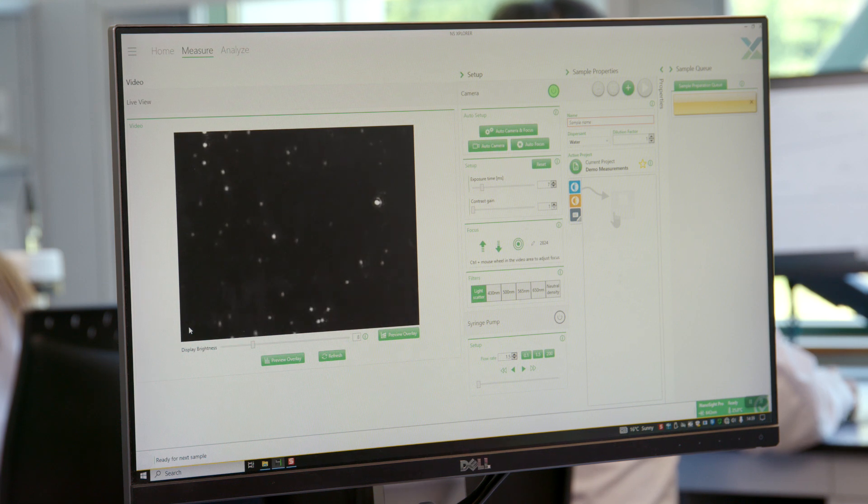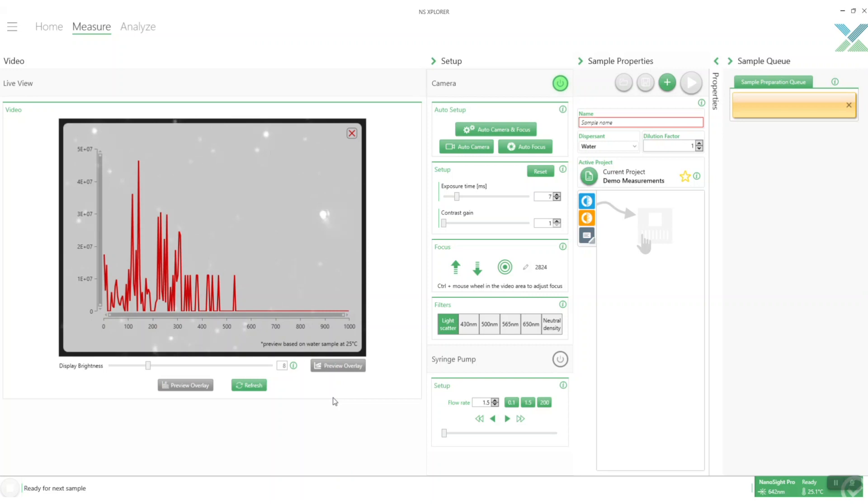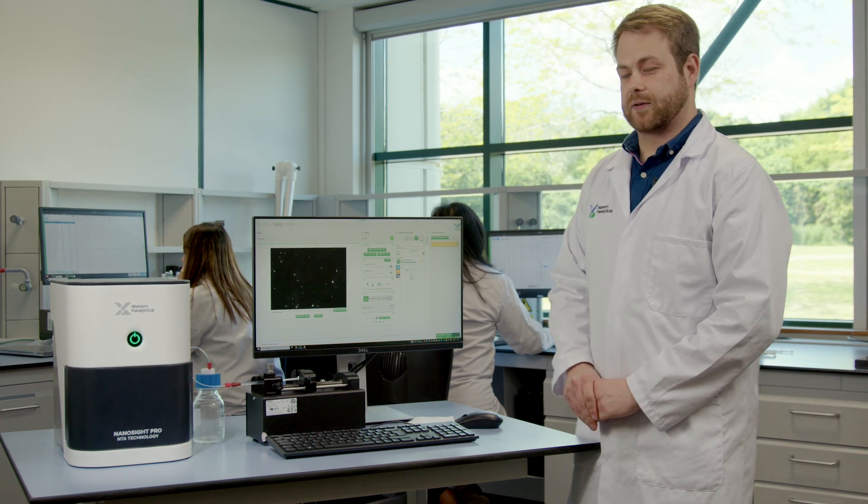To get a quick idea of how the size might be for your sample you can click on the preview overlay. This gives you a very quick graph to get an idea of what the size population might be and once you're happy with that you can look at setting up your measurement normally.